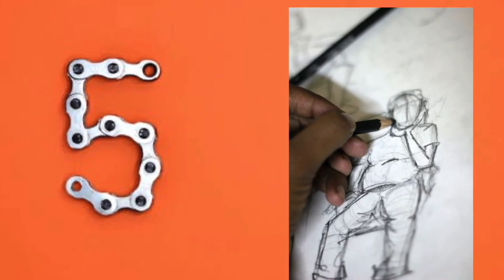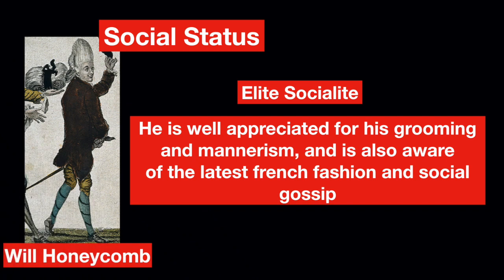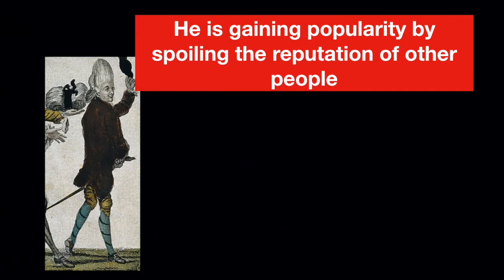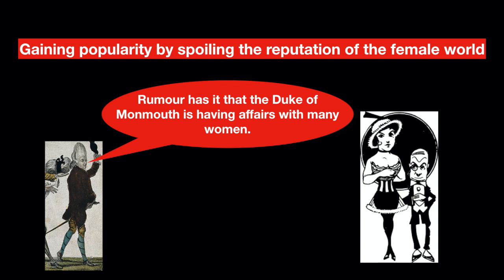The next character is an elite socialite, well appreciated for his grooming and mannerism, and also aware of the latest fashion and social gossip. His only limitation is that he gains popularity by spoiling the reputation of other people, mainly by circulating gossips — for example, spreading rumors about the Duke of Monmouth having affairs.